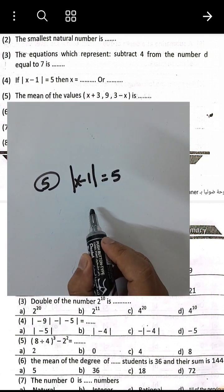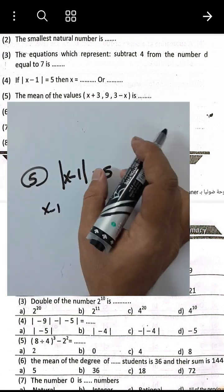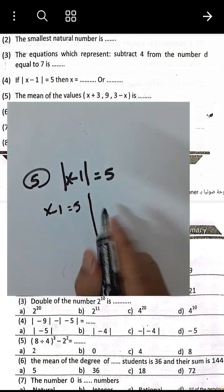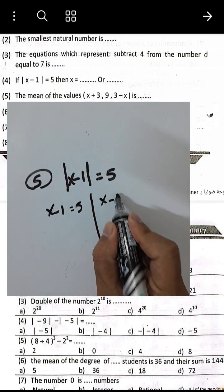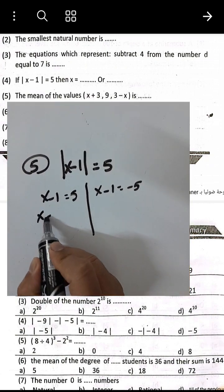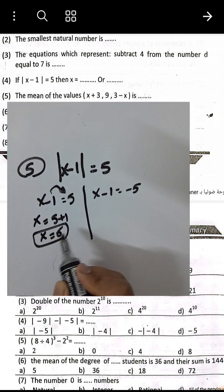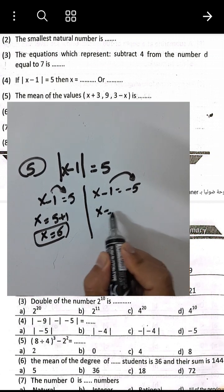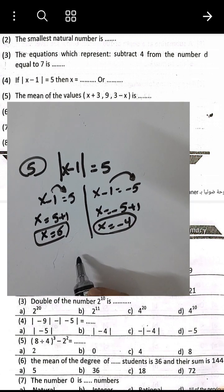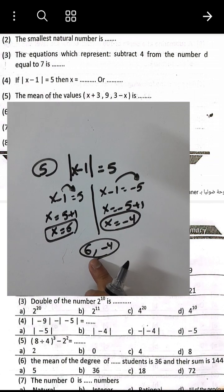Question number 4: Absolute value — |x minus 1| equals 5. We have two solutions because the absolute value of 5 equals 5 and the absolute value of negative 5 also equals 5. So x minus 1 equals 5 gives x equals 6, and x minus 1 equals negative 5 gives x equals negative 4. The solution is x equals 6 or x equals negative 4.